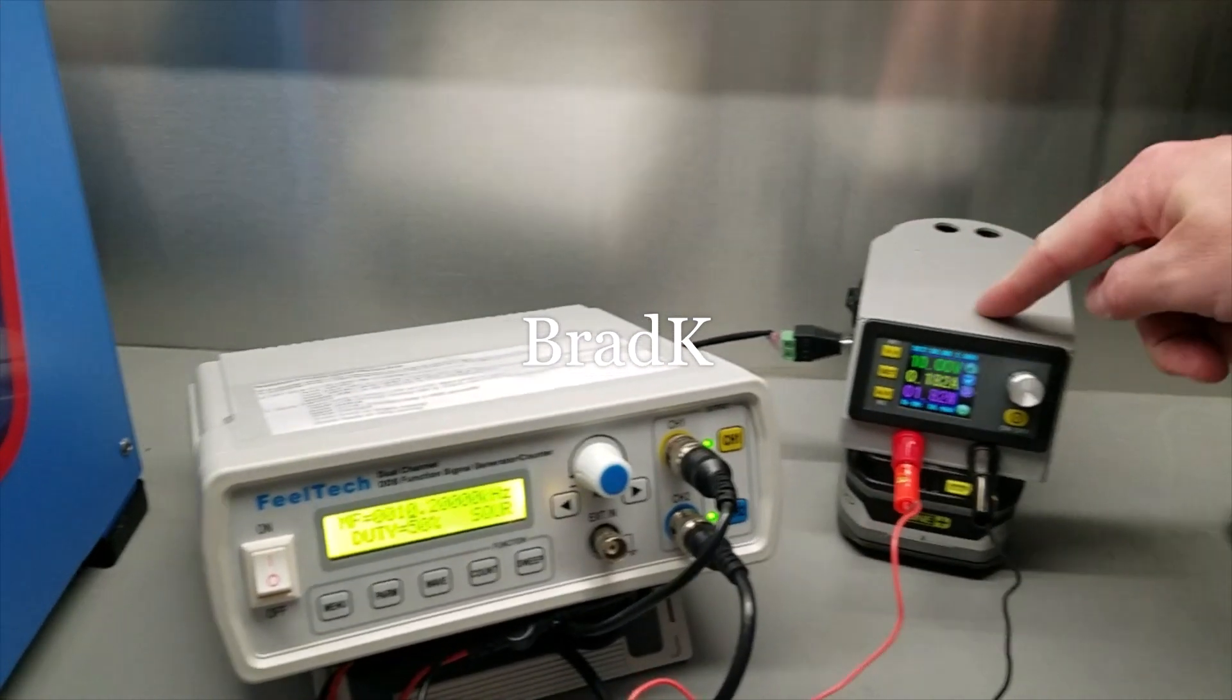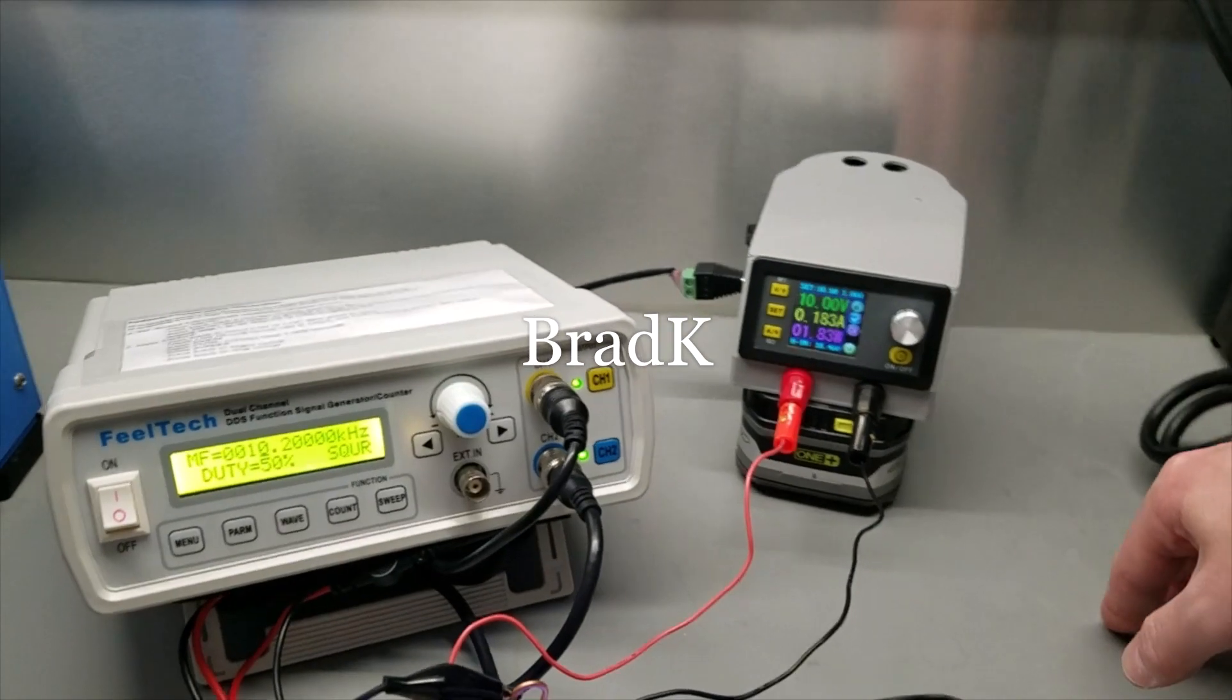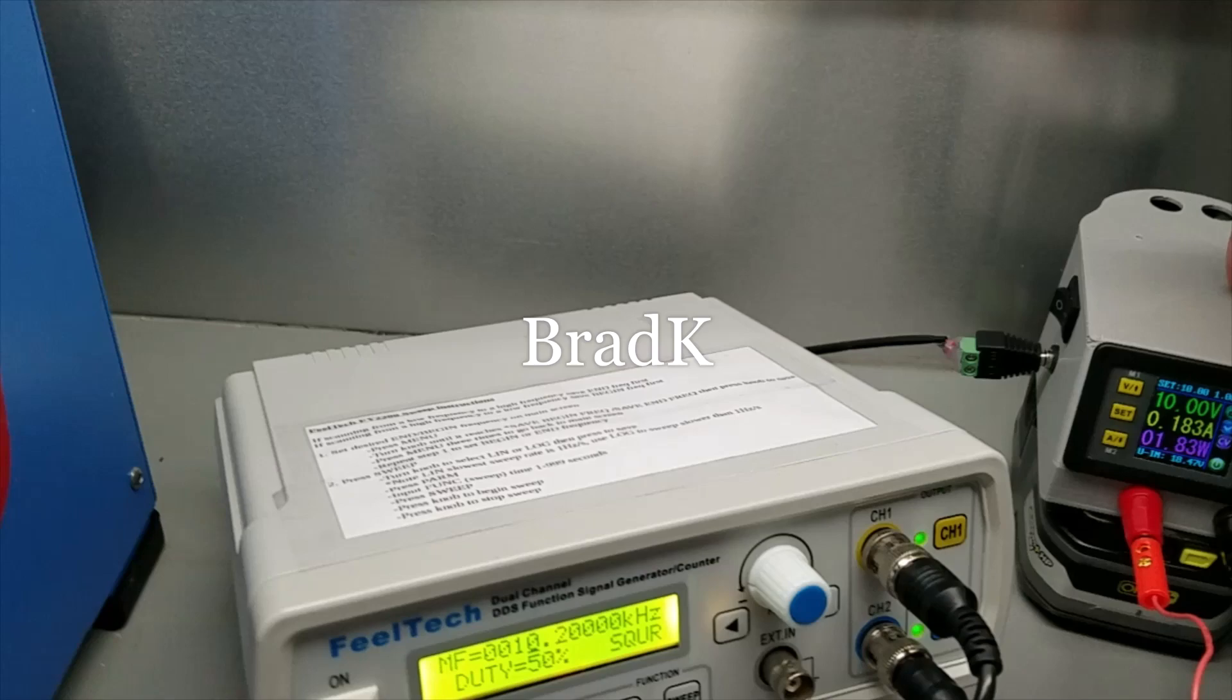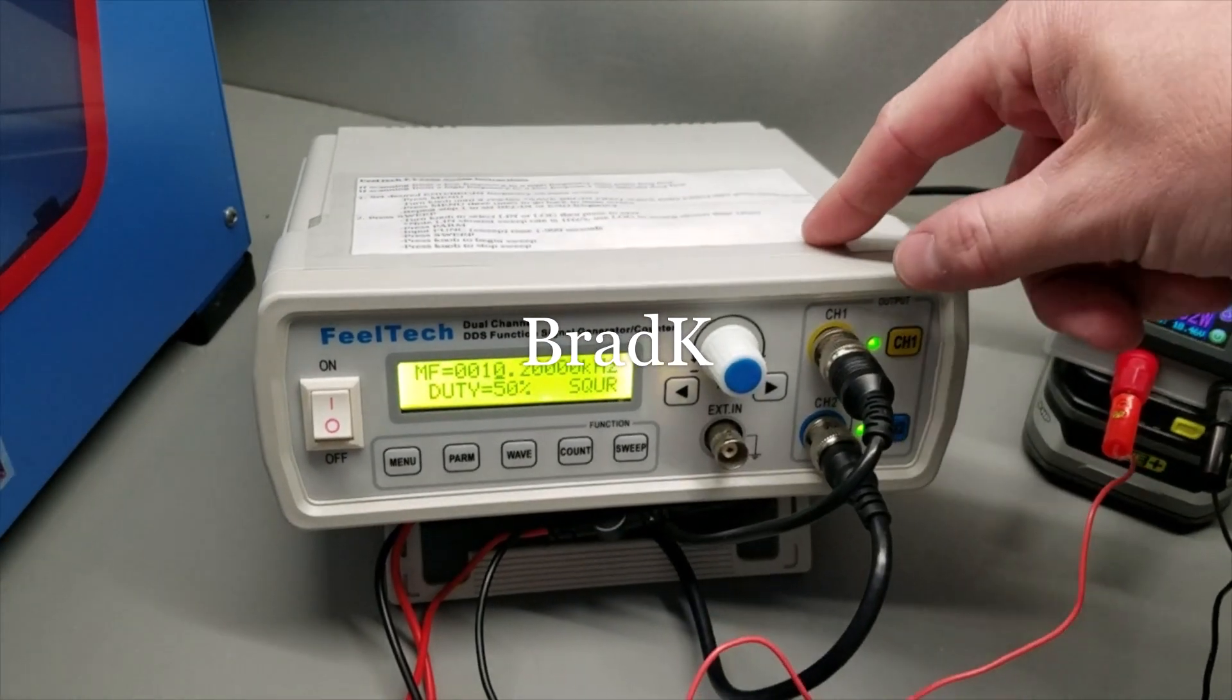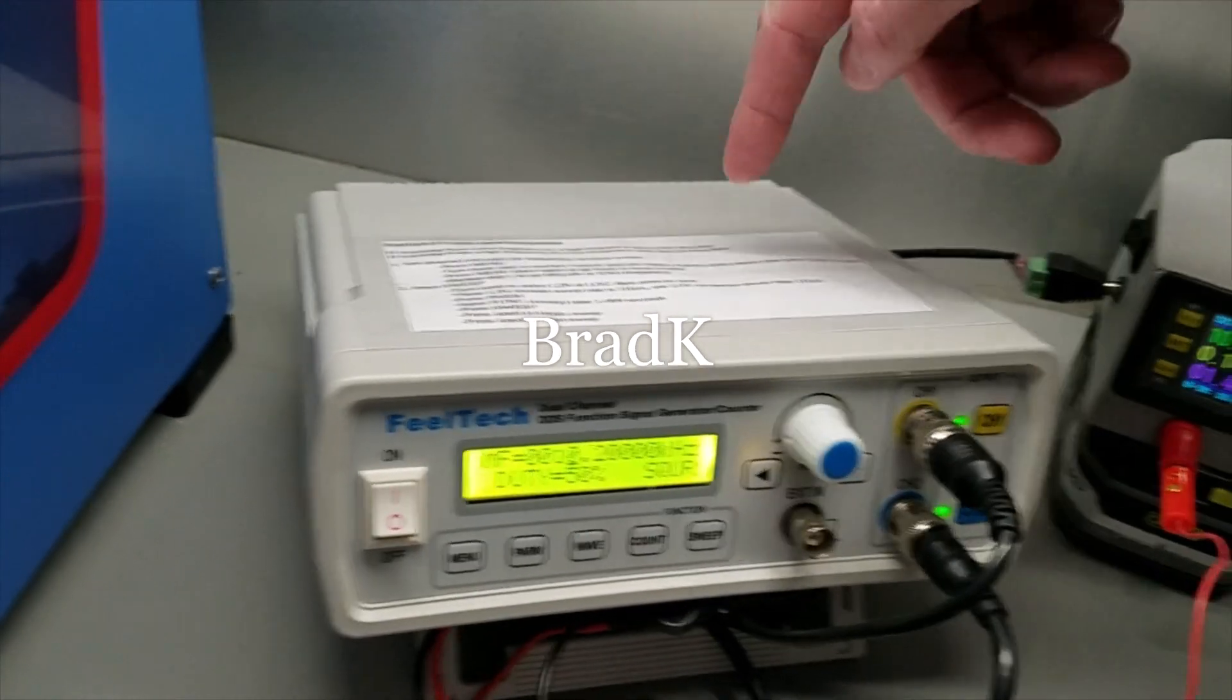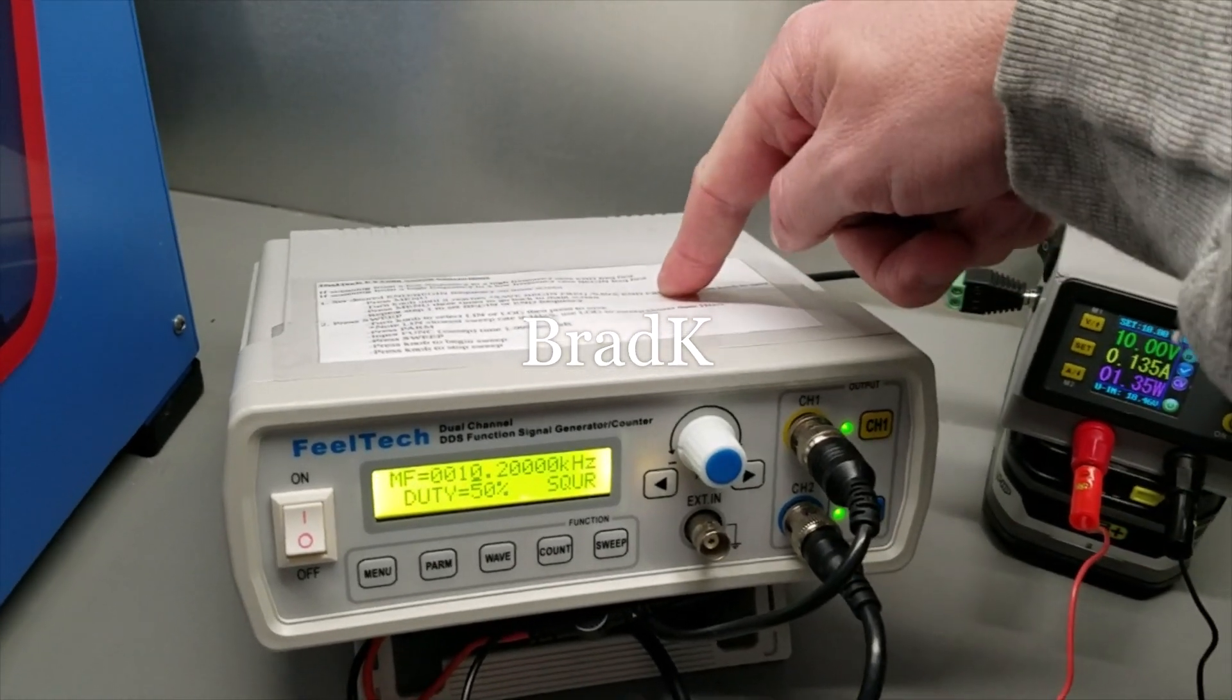This enclosure is 3D printed and I've got a switch on the side. This cable here powers my frequency generator. It actually runs on 12 volt DC, so I tapped right off the 18 volt battery then mounted a 7812 voltage regulator inside.